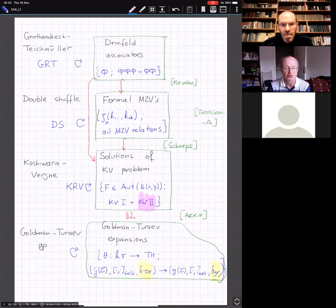It turns out that here there is an inclusion of sets. From each set of formal MZVs, you can construct a solution of the KV problem or a Goldman-Turaev expansion. Finally, there are so-called Drinfeld associators. We already saw on one of those first slides this cryptic notion phi phi phi equals phi phi, solutions of the pentagon equation. That equation I will also be able to show you on some next slides. From an associator you can construct formal MZVs, and from an associator you can also construct solutions of the KV problem.